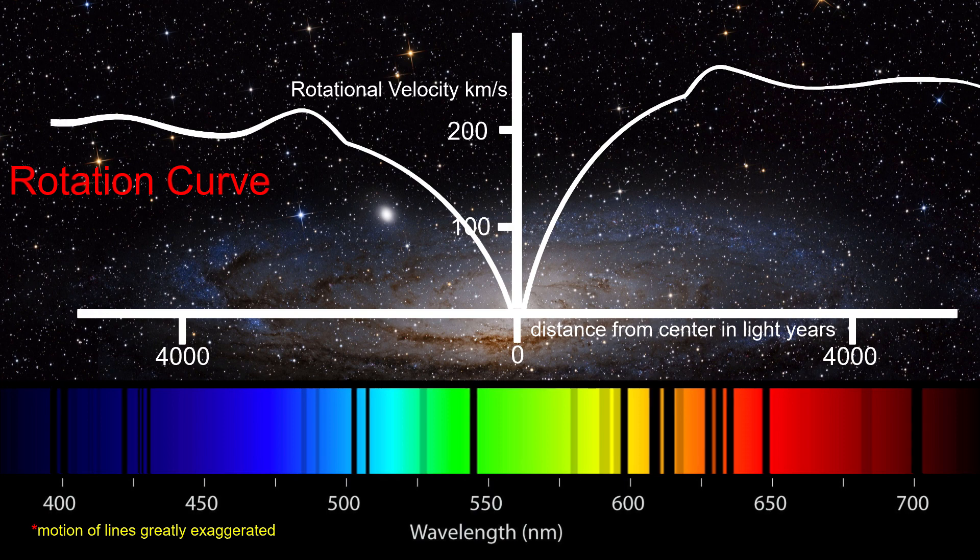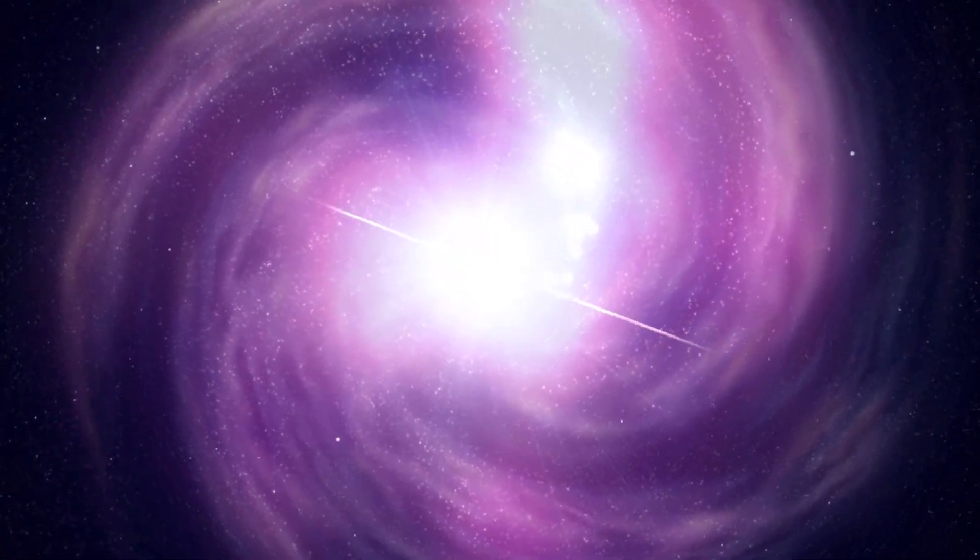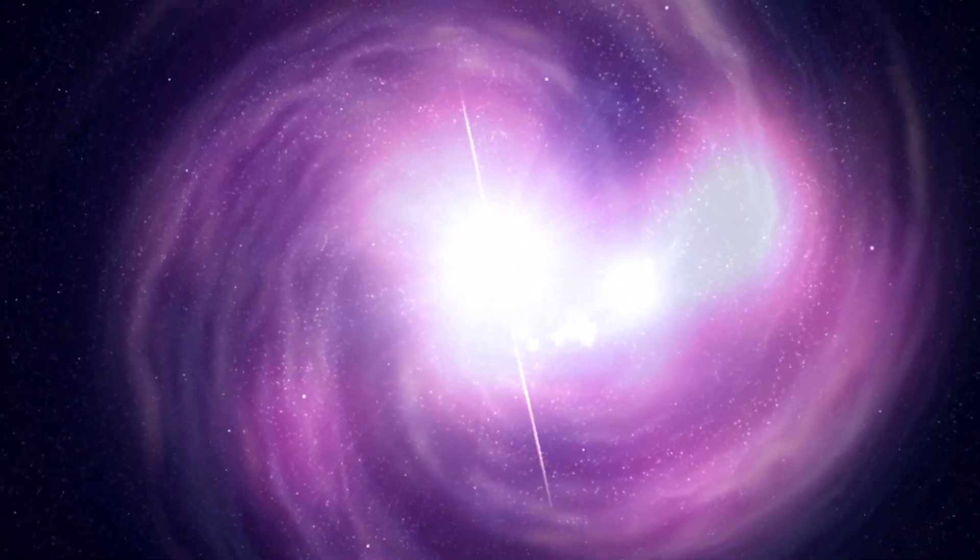Now, what we have is the average rates at which parts of the galaxy are moving towards or away from us. If we know how wide the Andromeda Galaxy is, which we do, then we can figure out how long it takes for parts of the galaxy to go around once.